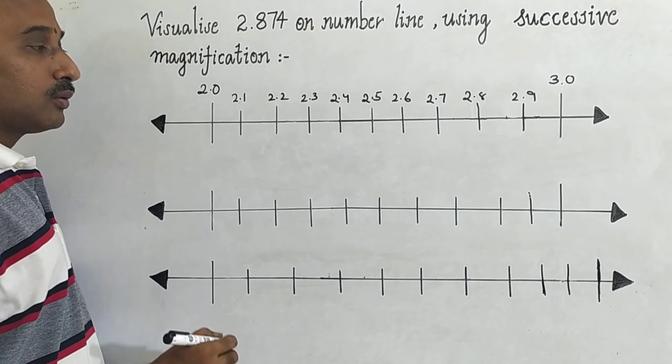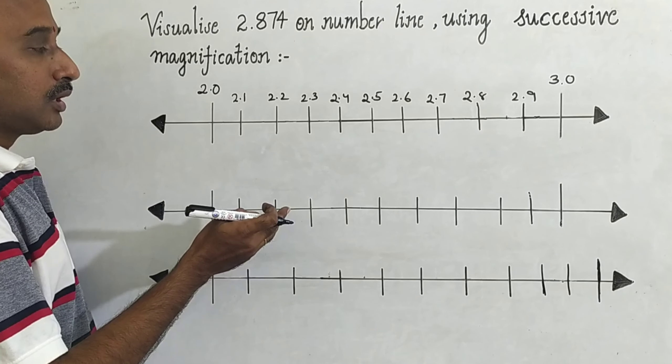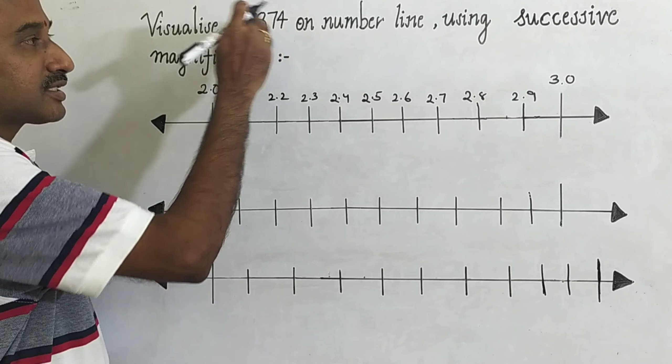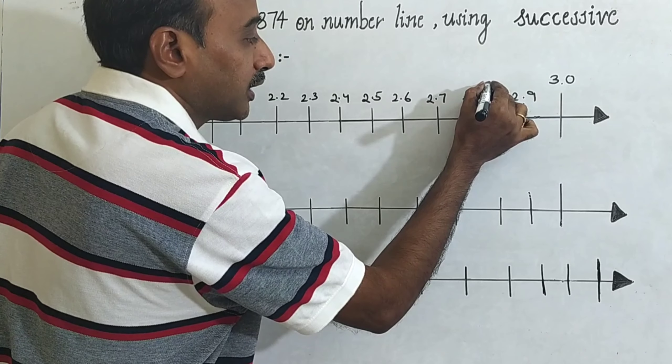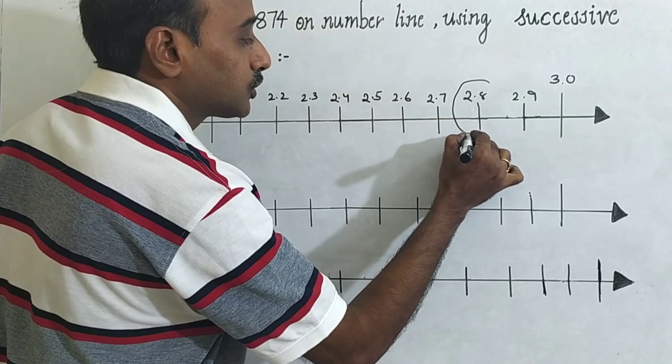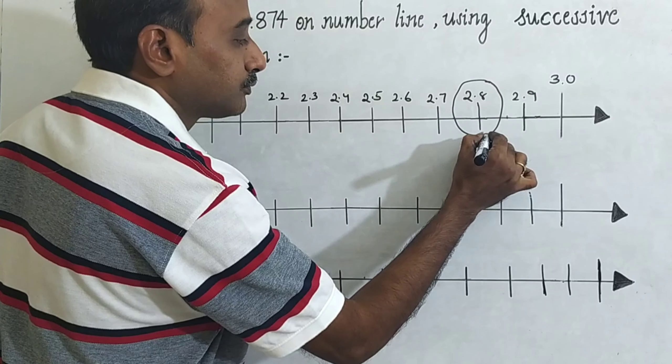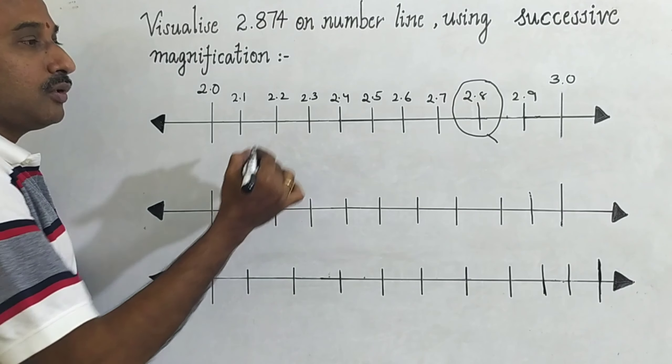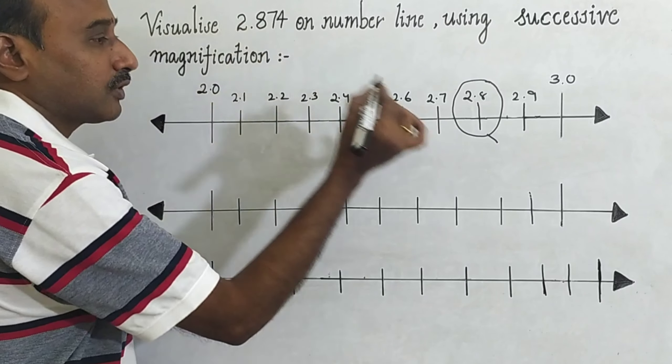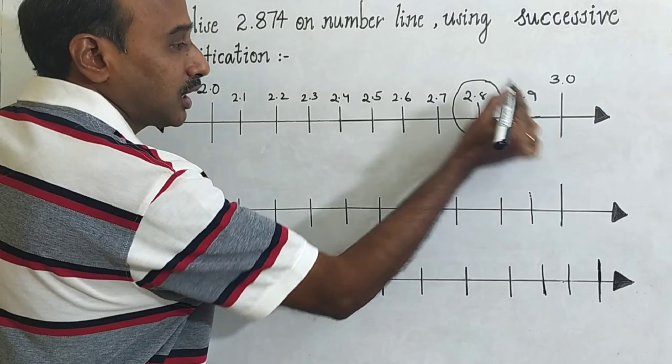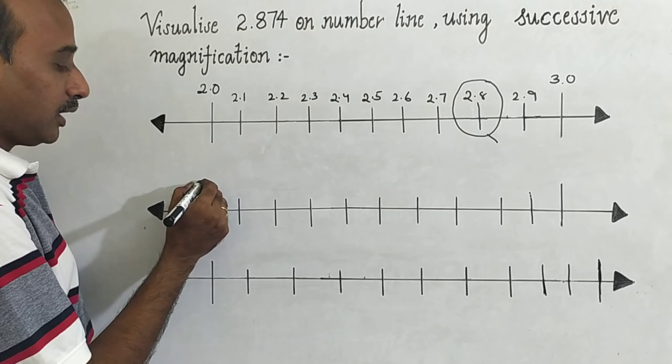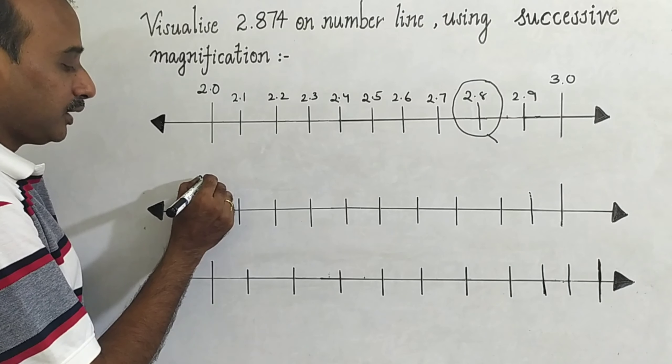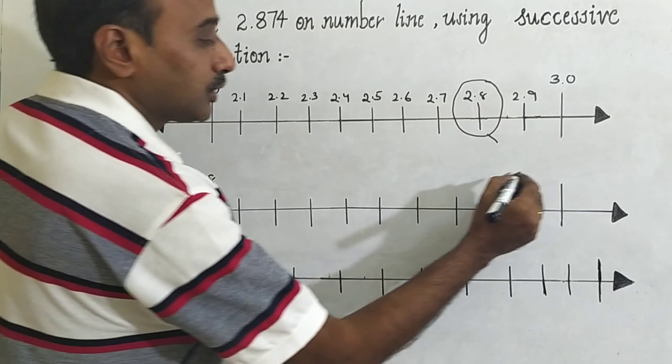Now again come to this 2.874. Here you see 2.8, you see how to magnify it. So this 2.874 lies between 2.8 and 2.9. Again come to the number line, take here 2.8, here you can take 2.9.